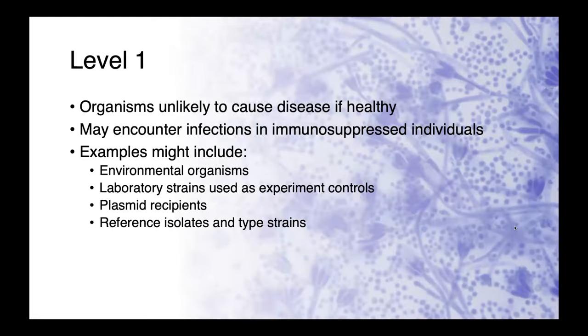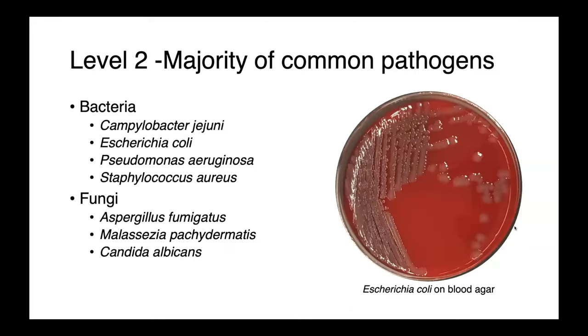What are some organisms that might fall into each of these biocontainment levels? Level one — these are bugs unlikely to cause disease in otherwise healthy individuals, though you may encounter infections in immunosuppressed individuals. Examples include environmental organisms like mold and soil bacteria, laboratory strains used as experimental controls, plasmid recipients, or reference isolates and type strains. Level two contains really the majority of common pathogens — bacteria like Campylobacter jejuni, Escherichia coli, Pseudomonas aeruginosa, and Staphylococcus aureus, all very common opportunistic pathogens, would be considered biocontainment level two.